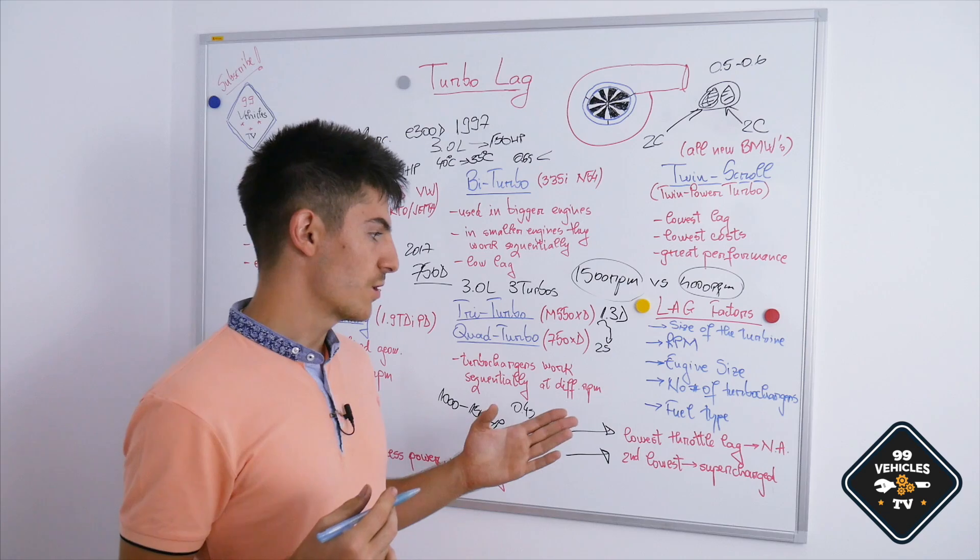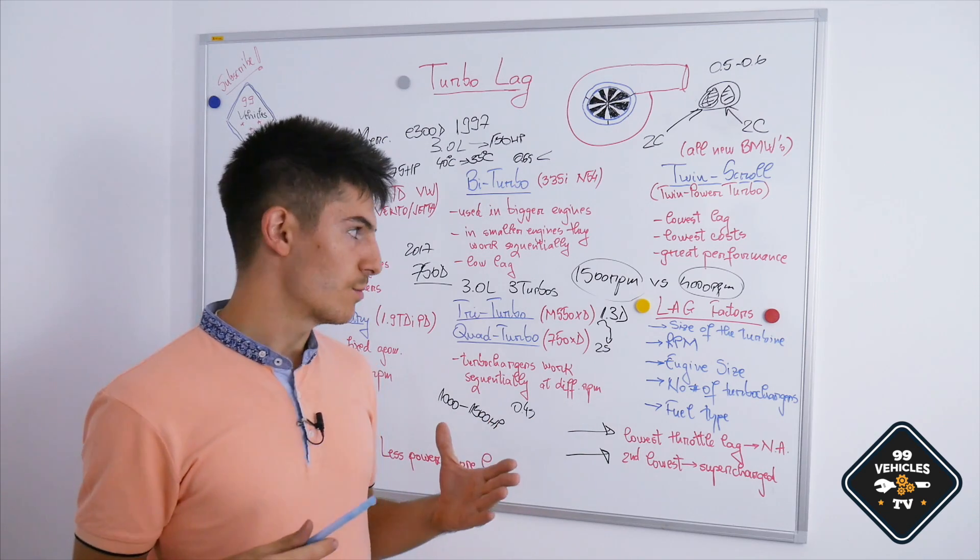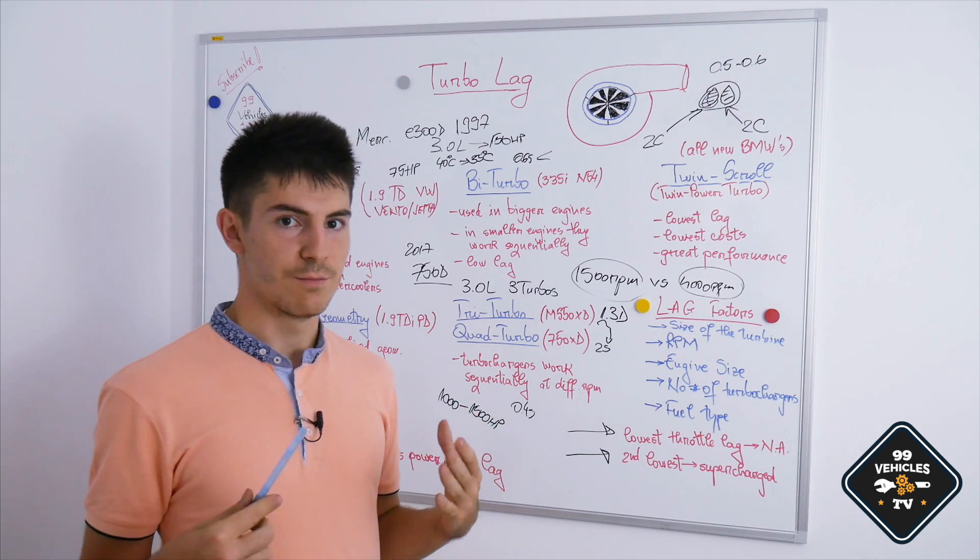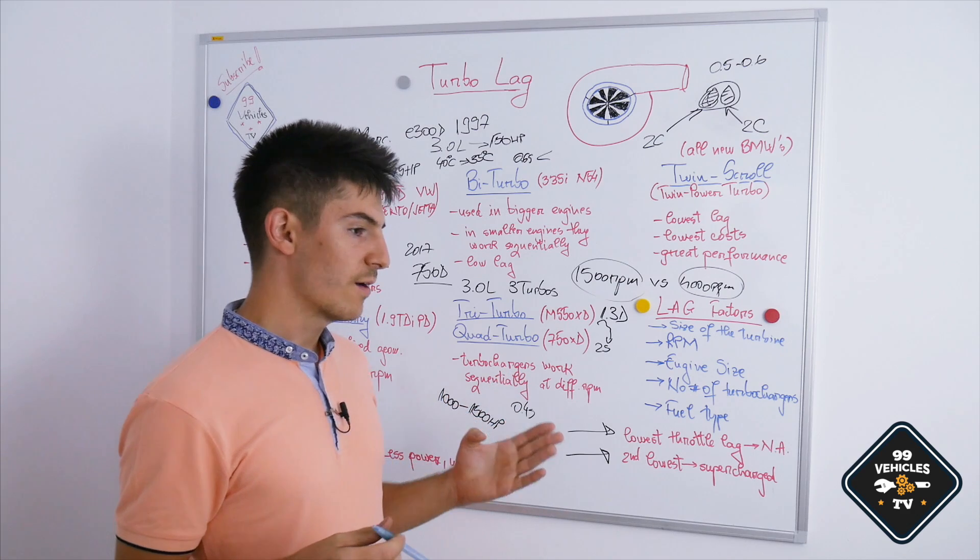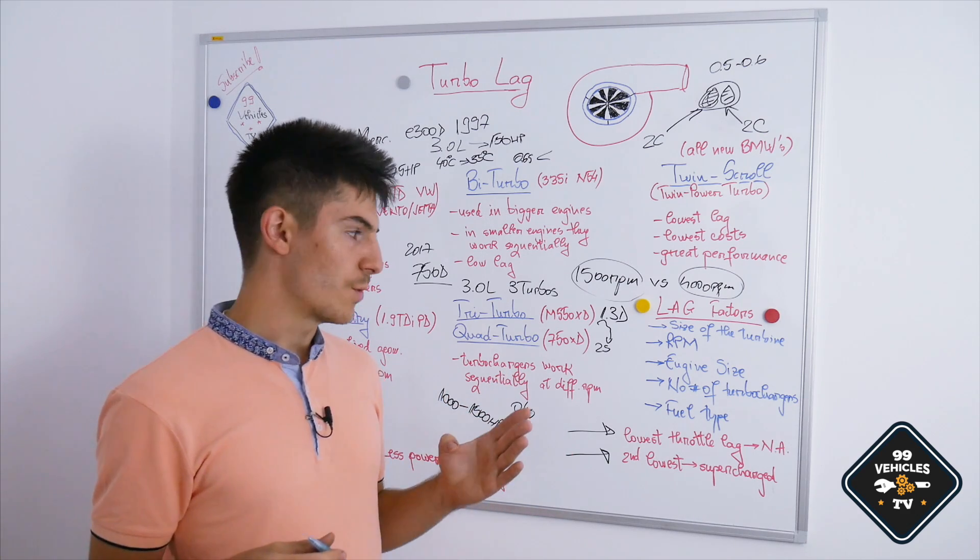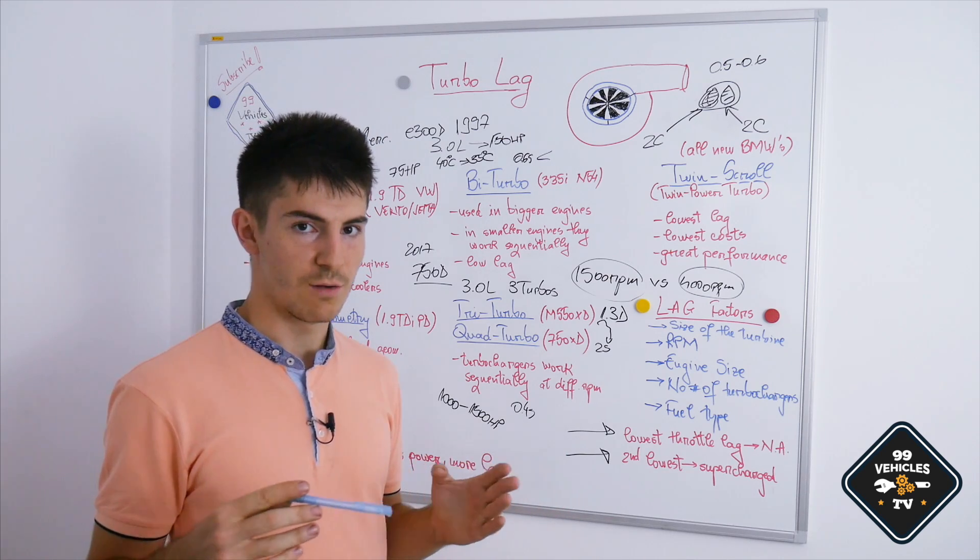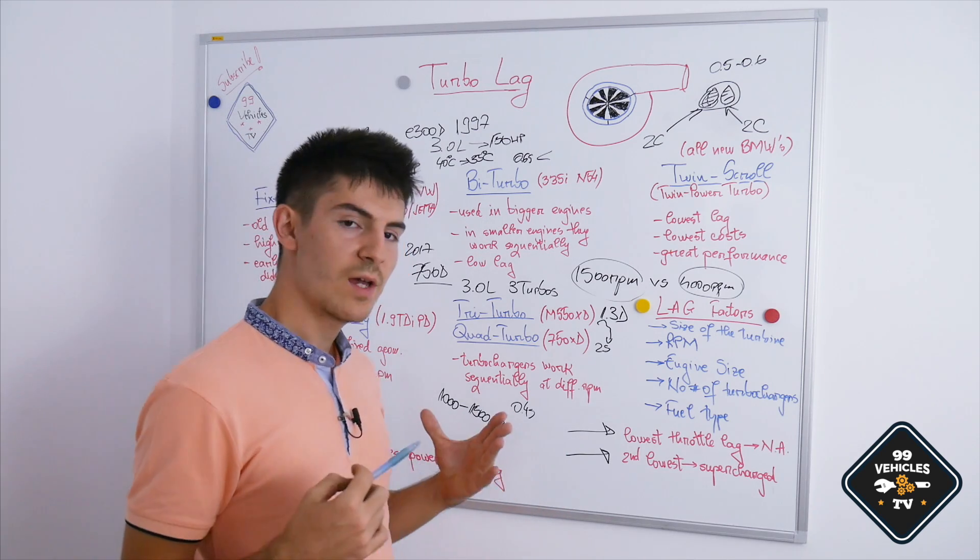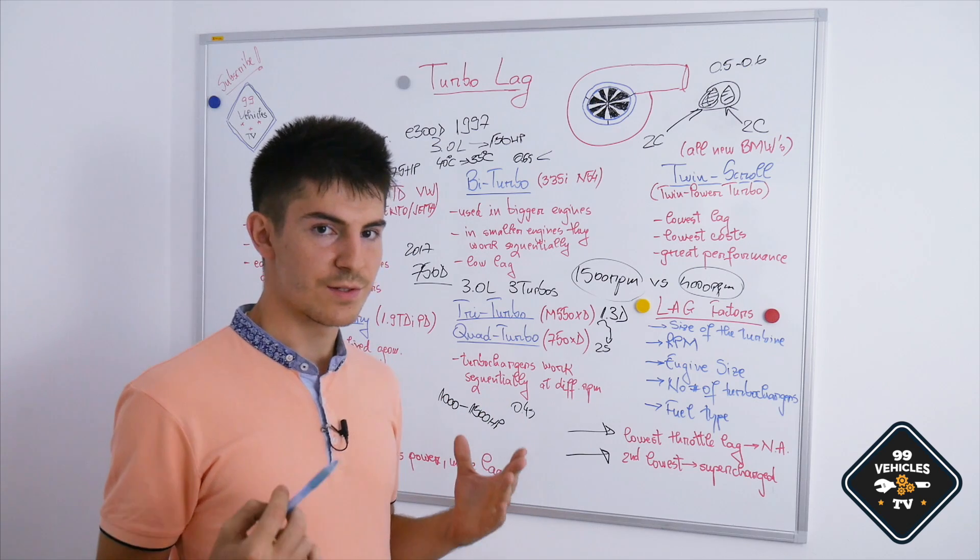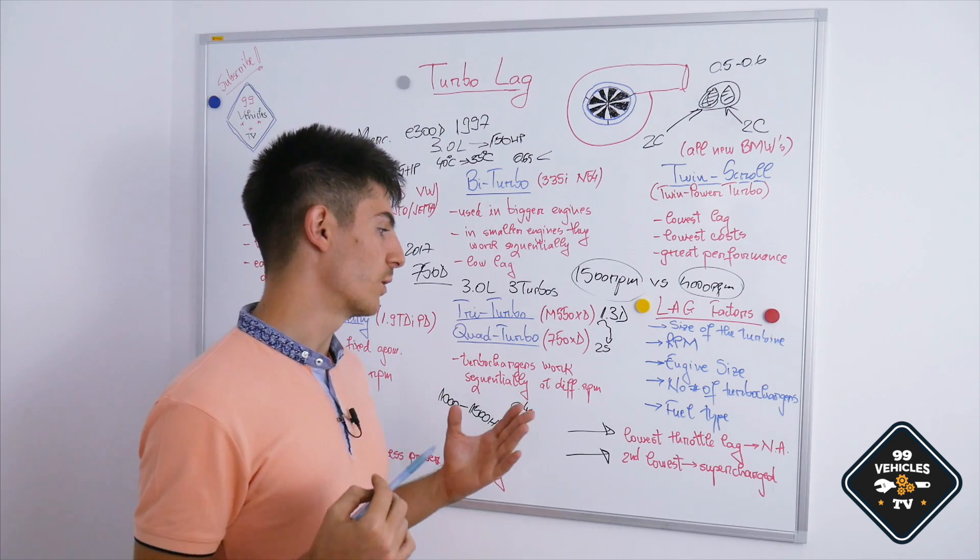Also, the number of turbochargers. If we have a twin-turbo system, a three-turbo system, like in the BMW, we have three turbochargers with three different sizes and each of them works sequentially at different RPM ranges. So if we have a twin-turbo system, we will experience a smaller delay. We will have a smaller lag.